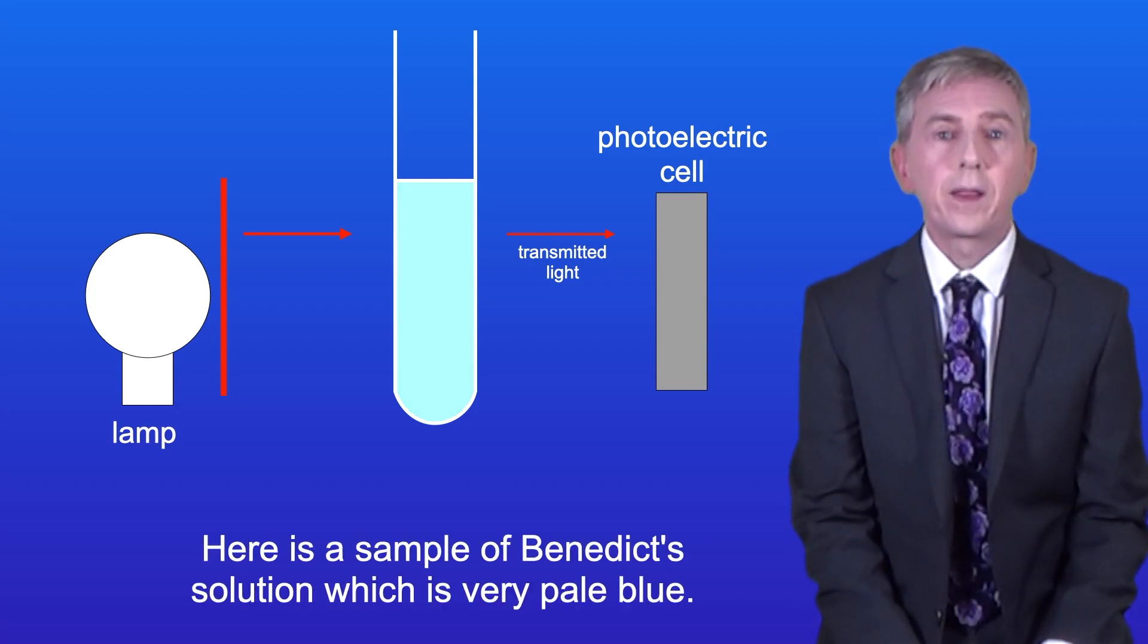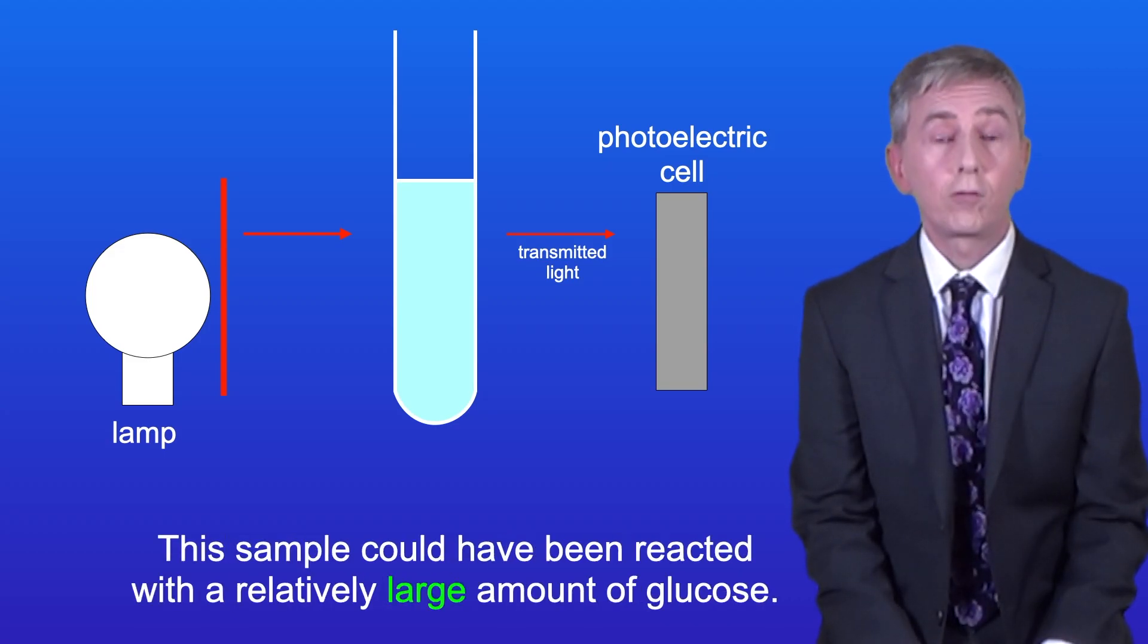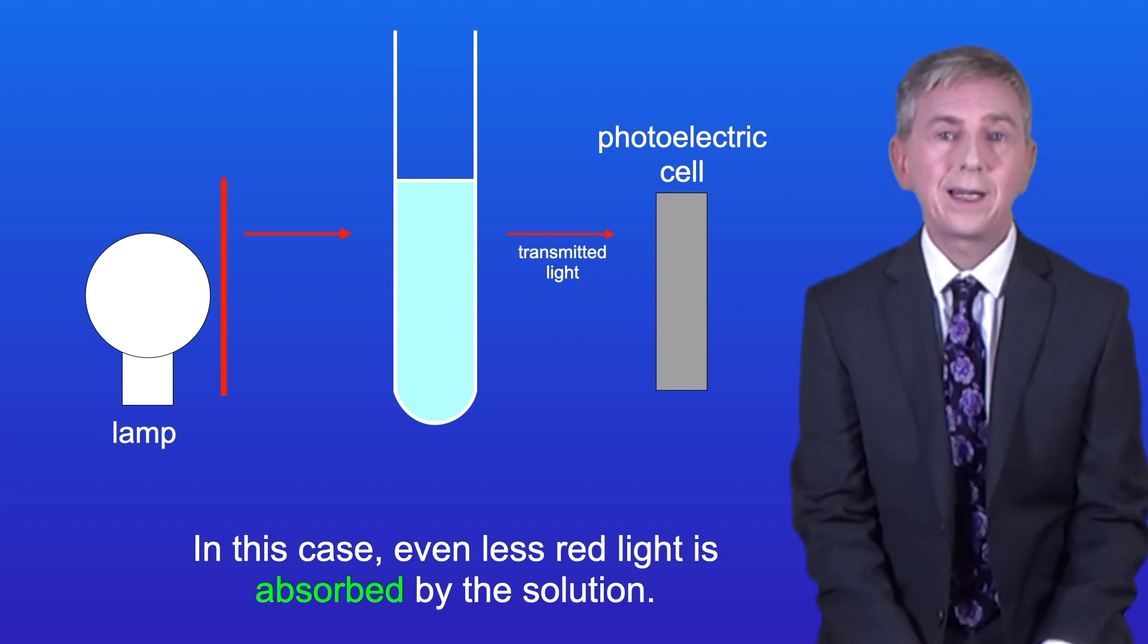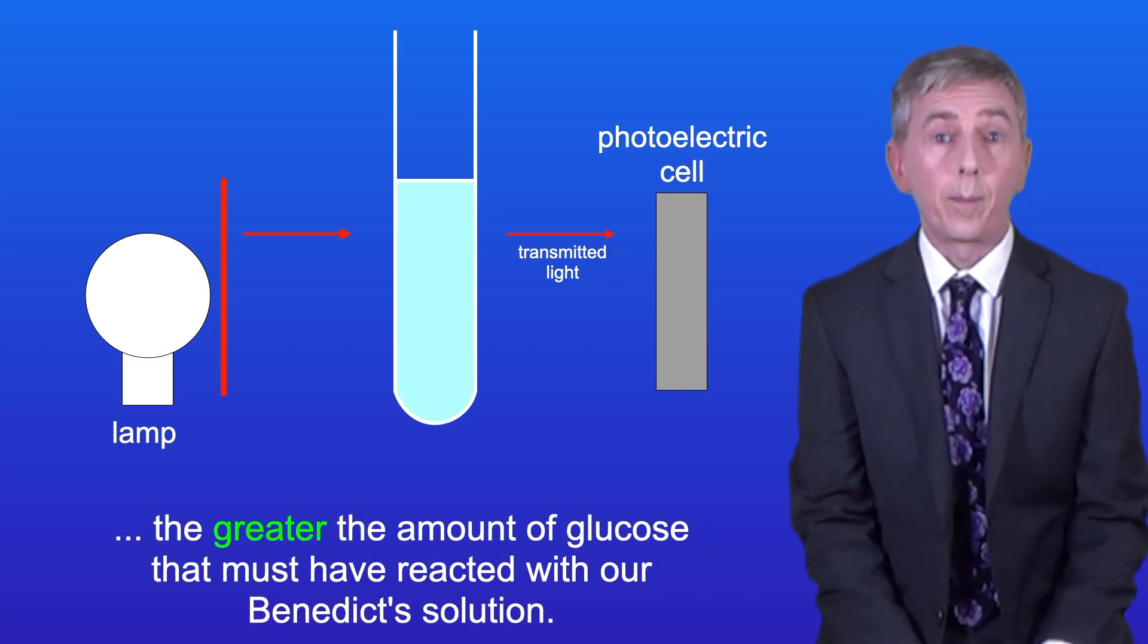Here's a sample of Benedict's solution which is very pale blue. So this sample could have been reacted with a relatively large amount of glucose. In this case, even less red light is absorbed by this solution. So as you can see, the less red light is absorbed, the greater the amount of glucose that must have reacted with our Benedict's solution.